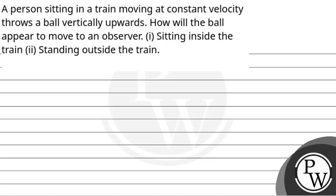Hello, let's see the question. The question says that a person sitting in a train moving at a constant velocity throws a ball vertically upwards. How will the ball appear to move to an observer sitting inside the train, and to an observer standing outside the train?